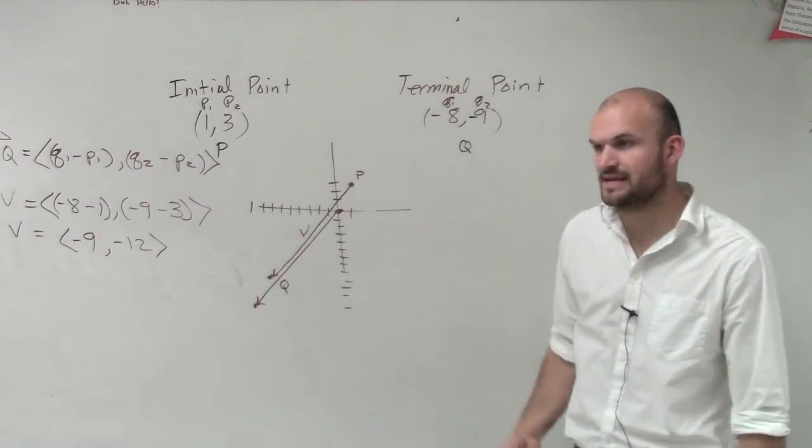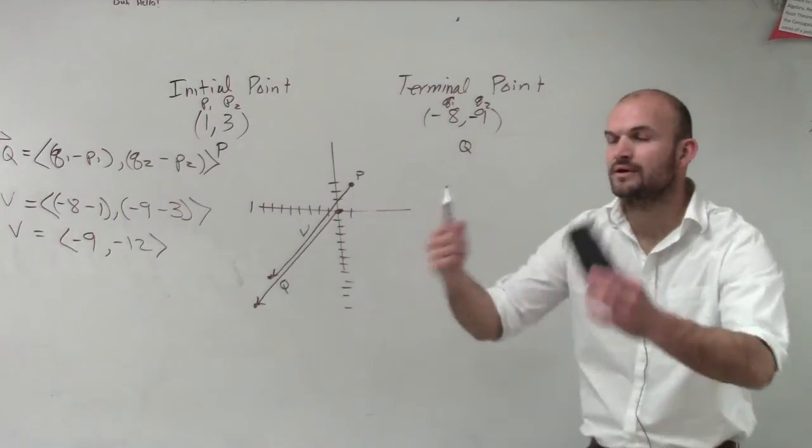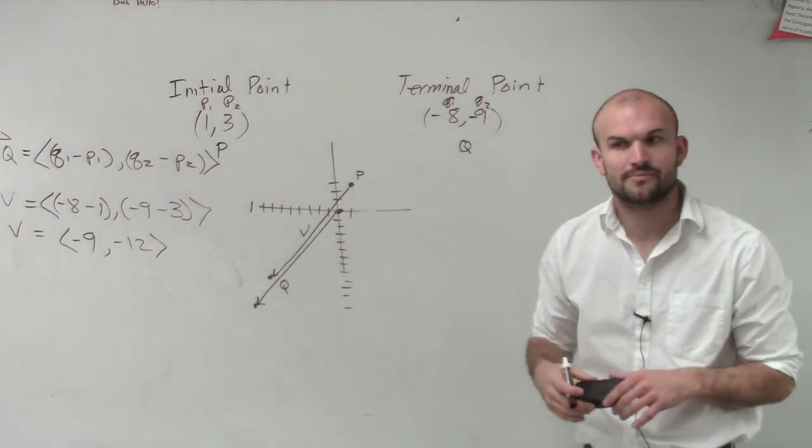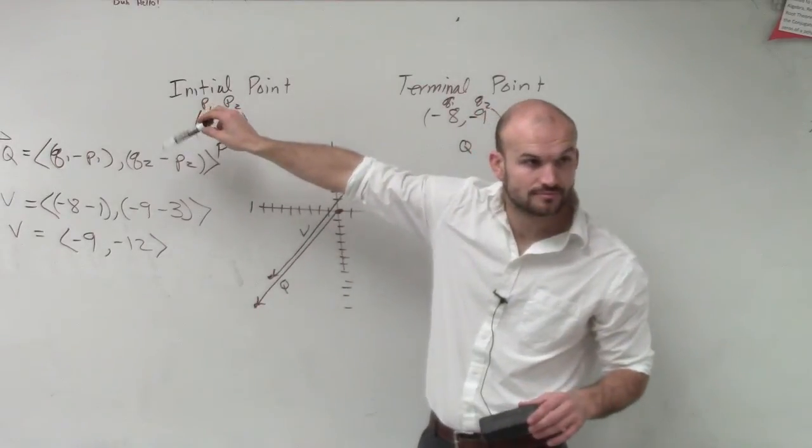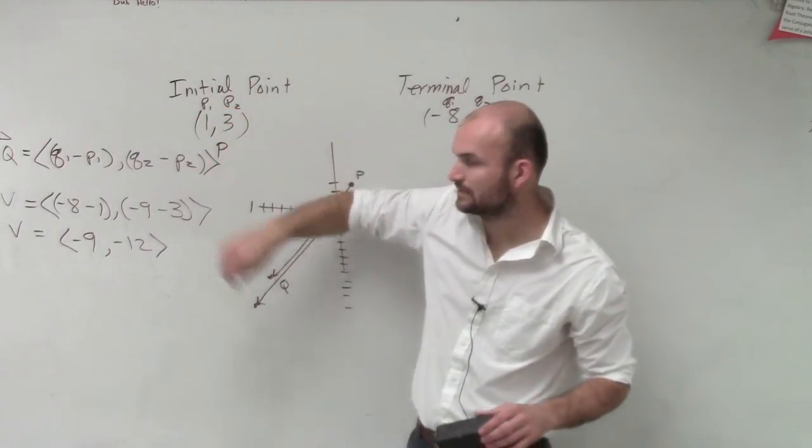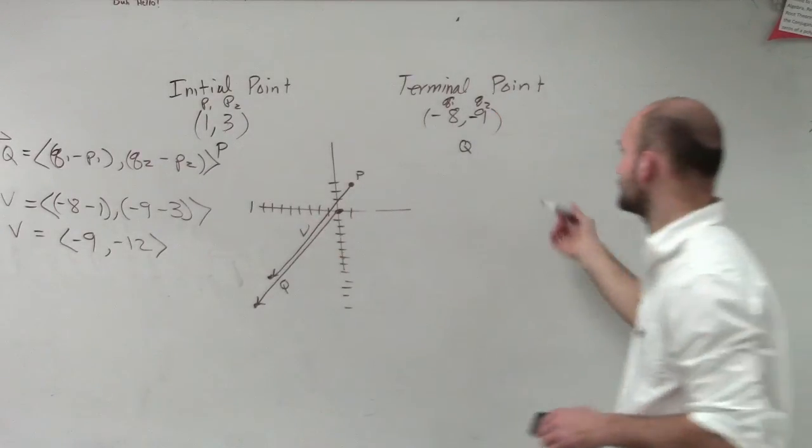It looks like it has about the same magnitude and direction, doesn't it? And therefore, but however, this vector now has an initial point at 0, 0. So that's how you find the component form, right? Okay? Just do your change in your Qs and Ys. Now let's find the magnitude.